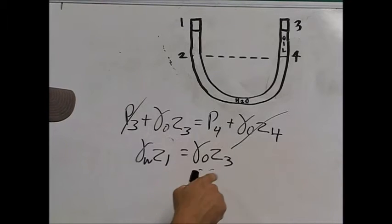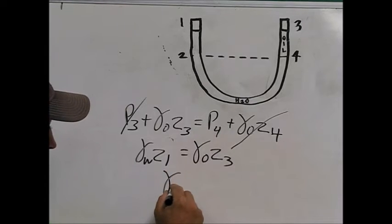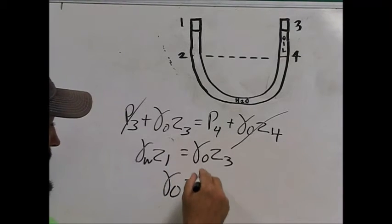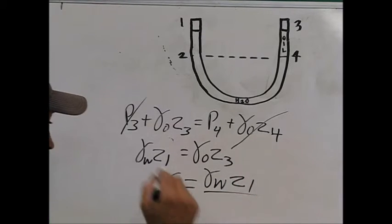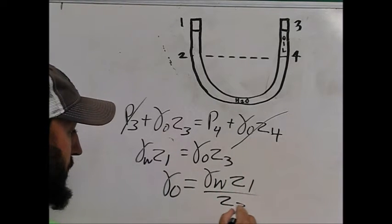We are trying to solve for and determine our gamma oil, so rearranging the equation, we would end up with gamma of the water times Z1 divided by Z3.